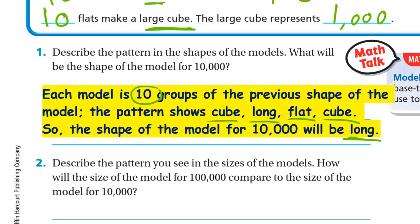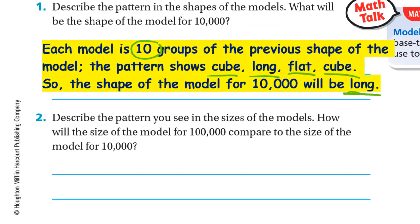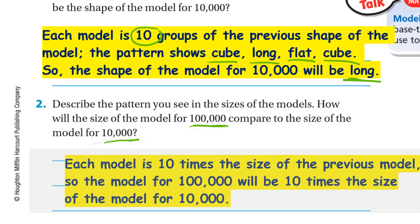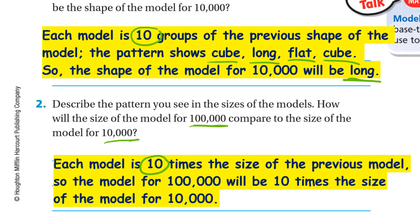The pattern is cube, long, flat, then we start again: cube, long, flat, and so on. Describe the pattern in the sizes of the models. How will the size of the model for 100,000 compare to the size of the model for 10,000? Each model is 10 times the size of the previous model, so the model for 100,000 will be 10 times the size of the model for 10,000.